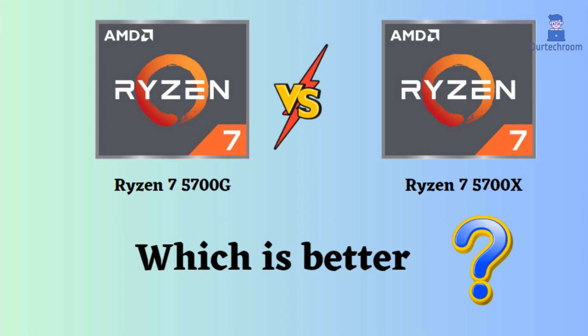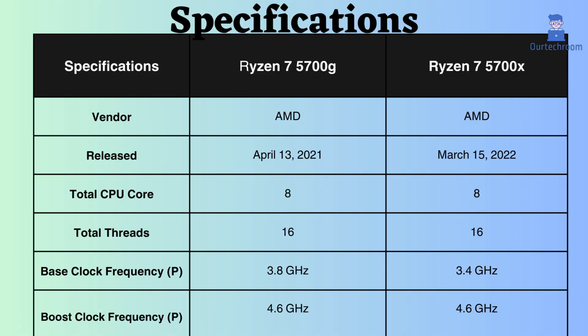The Ryzen 7 5700X was released approximately 11 months after the release of the Ryzen 7 5700G. Both processors feature 8 performance cores and 16 performance threads. This increased count enables the processors to handle multiple tasks simultaneously and efficiently.